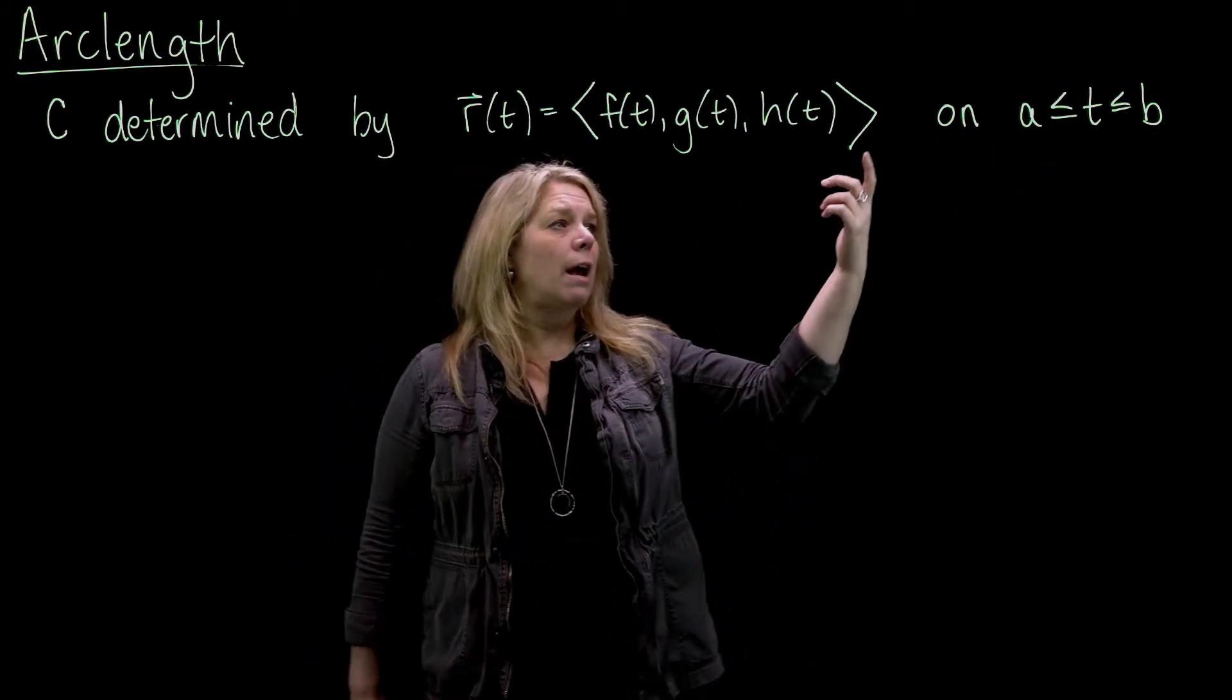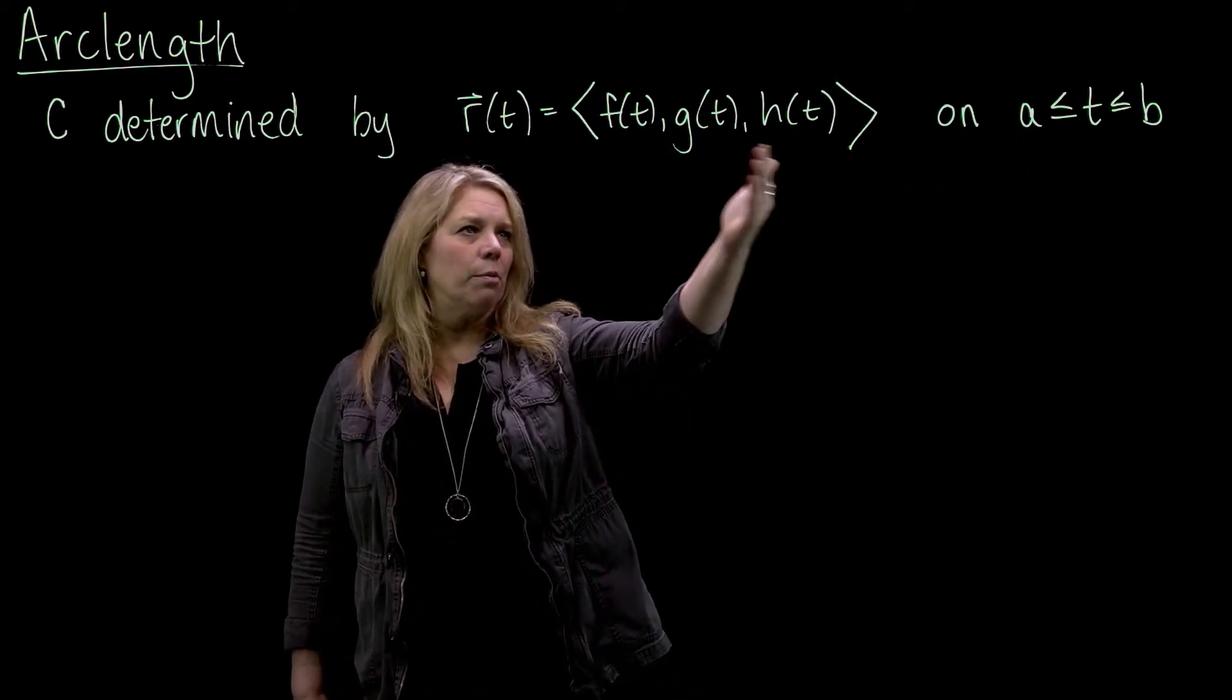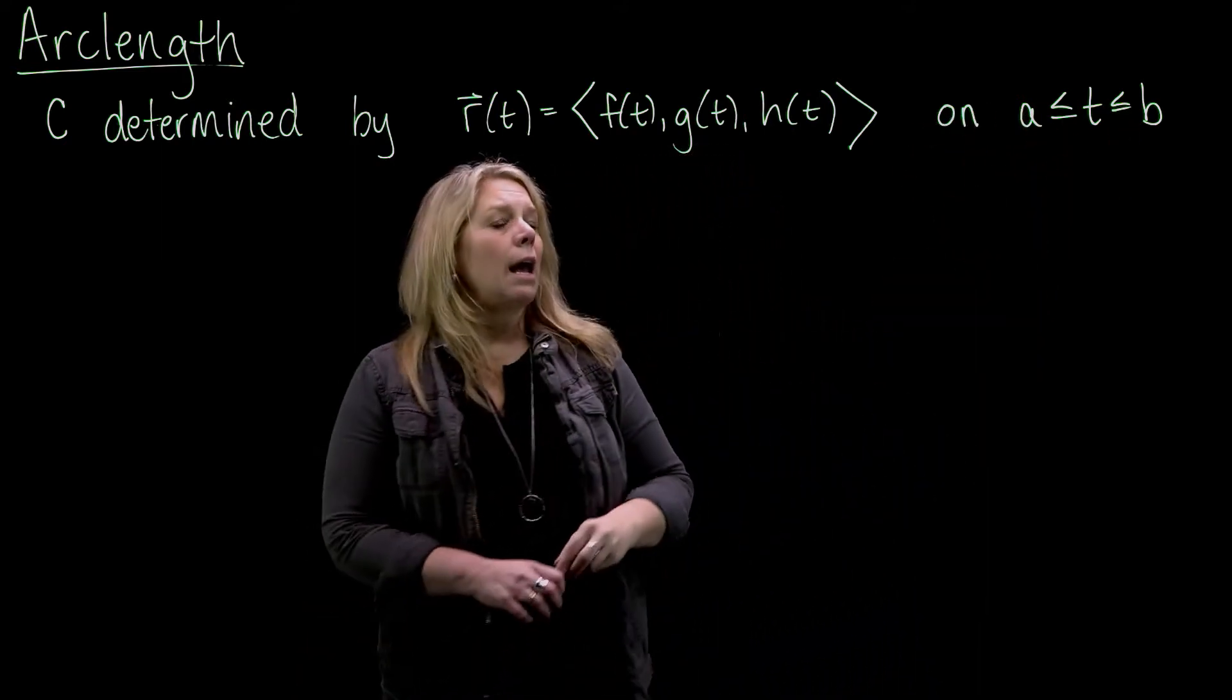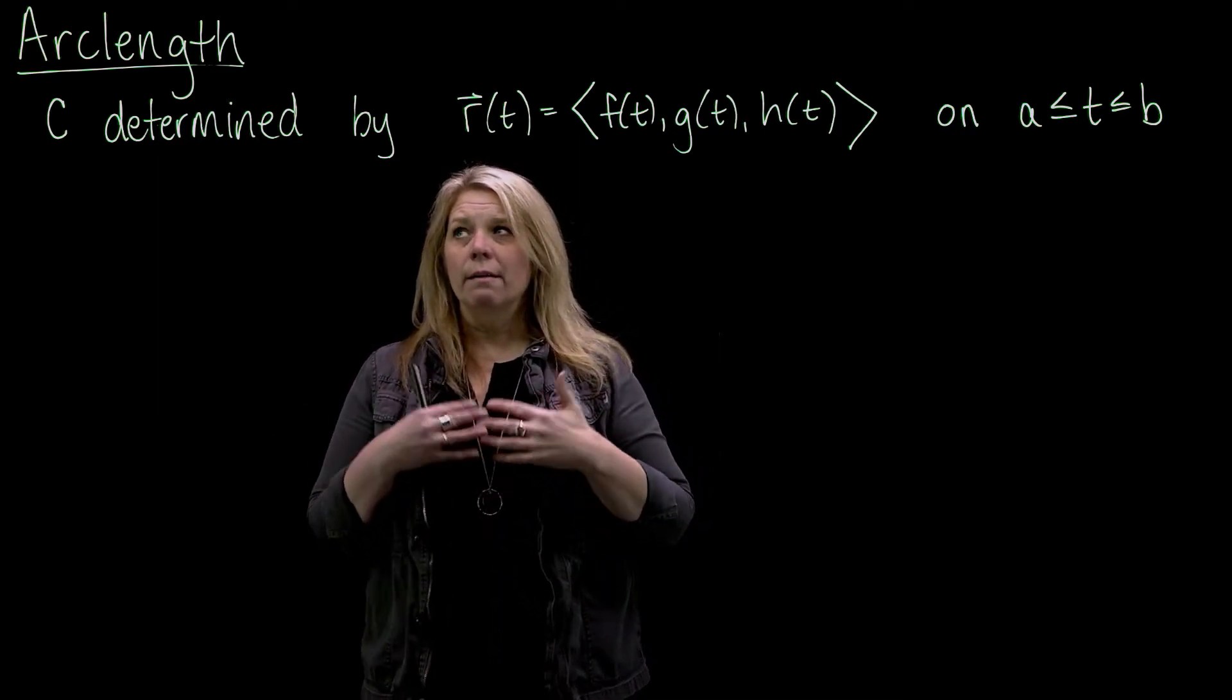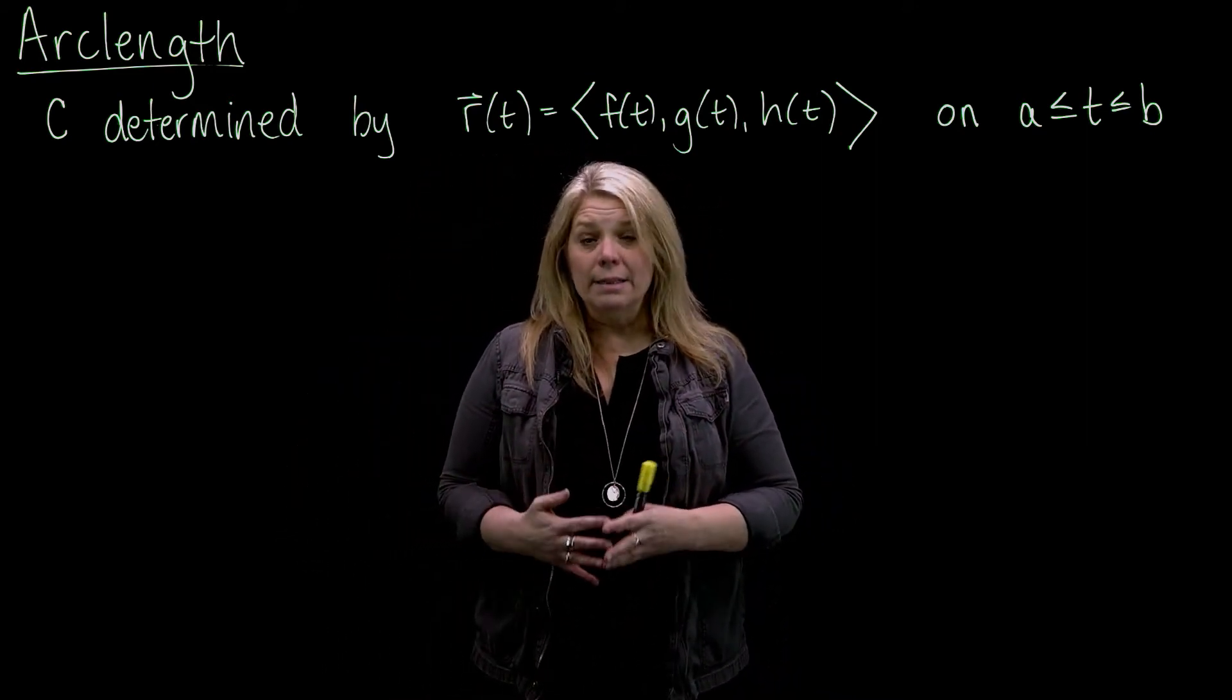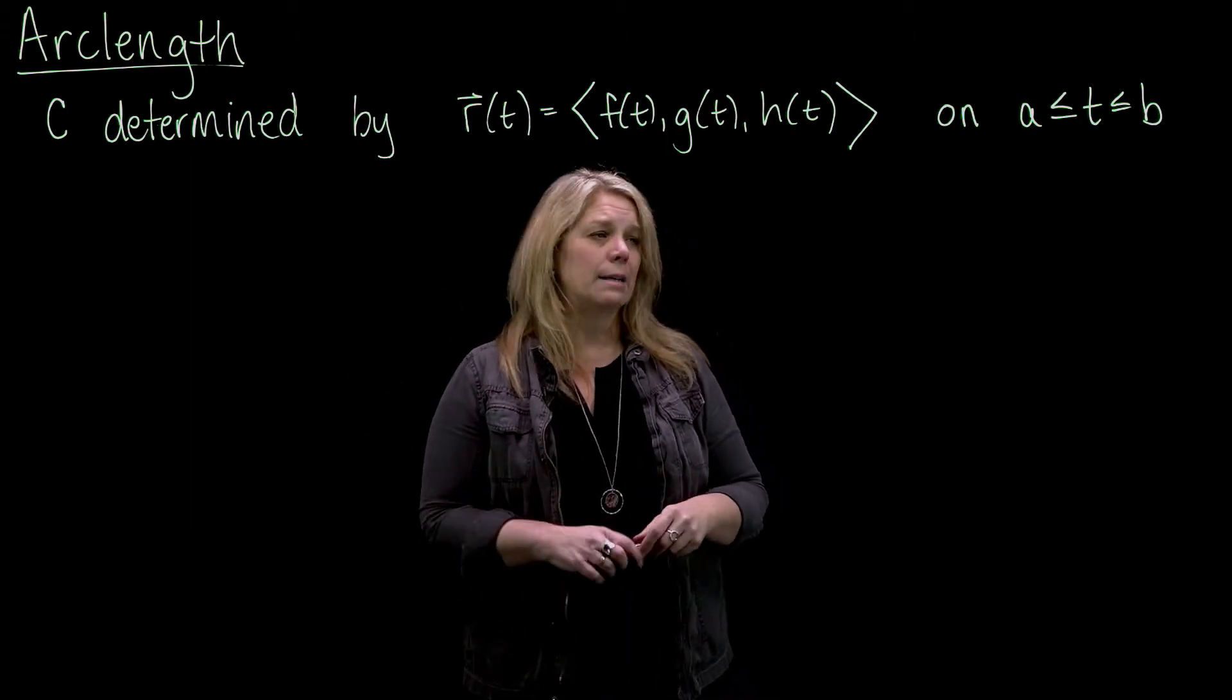So this curve would have a starting point at t equals A, whatever the terminal point of this vector is when t equals A would be the starting point of the curve, and then an ending point at t equals B. What we want to do is think about how we would come up with a formula for calculating this arc length, but ultimately you want to just be able to write this formula down so that you can use it to do the calculations in your homework and on a test.